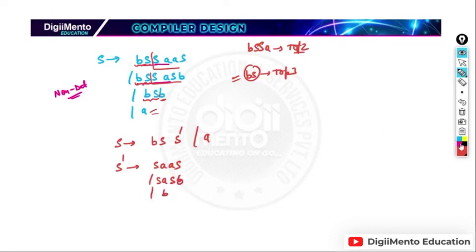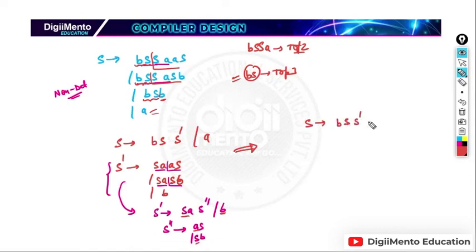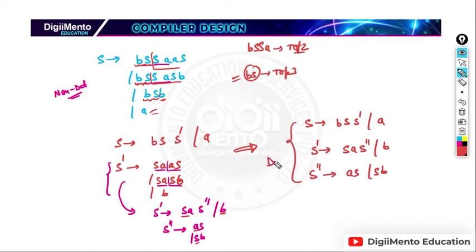We factor out 'sa' from S', giving S''. So: S' → sa S'' | b, and S'' → as | sb. Now there is no common prefix — here it is 's' and 'b' in S', and 'a' and 's' in S''. The full deterministic grammar is: S → bs S' | a; S' → sa S'' | b; S'' → as | sb.